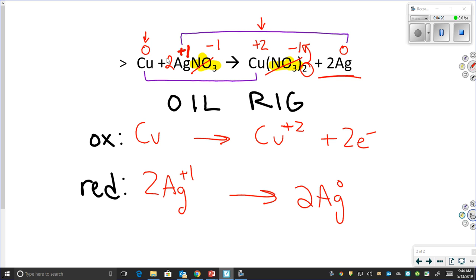To go from plus one to zero, we have to gain one electron, but the issue with this is that we have two of them, so that means that we're gaining one electron twice. So, that means we are going to add in two electrons.